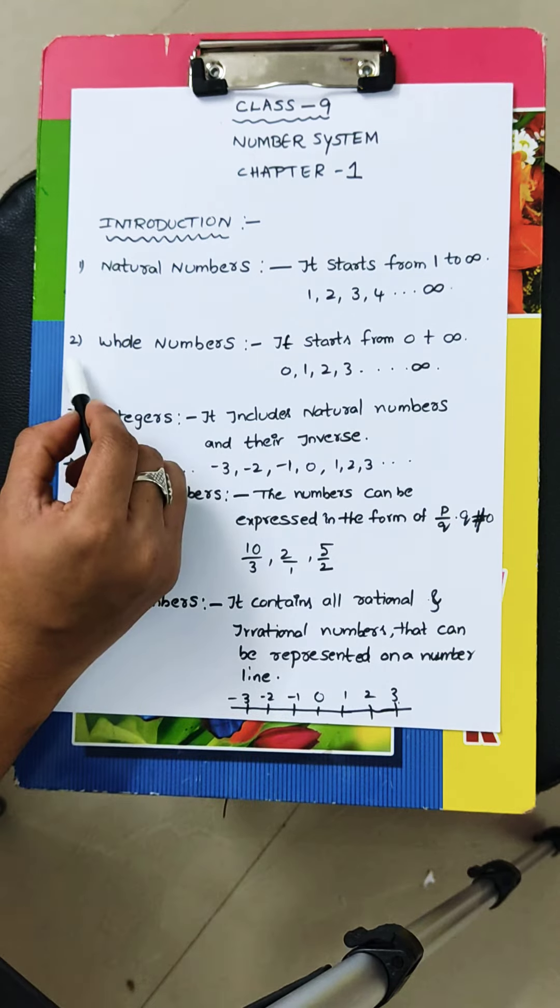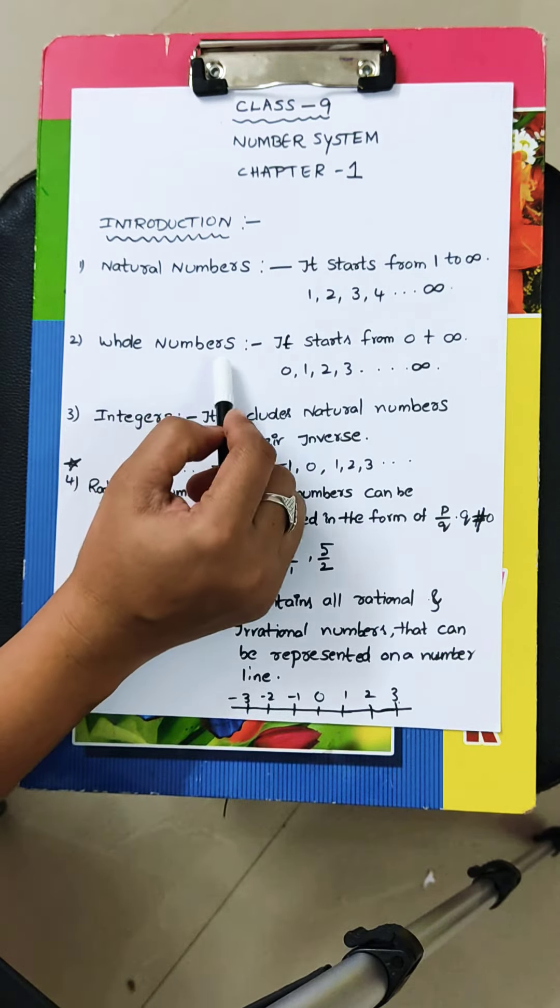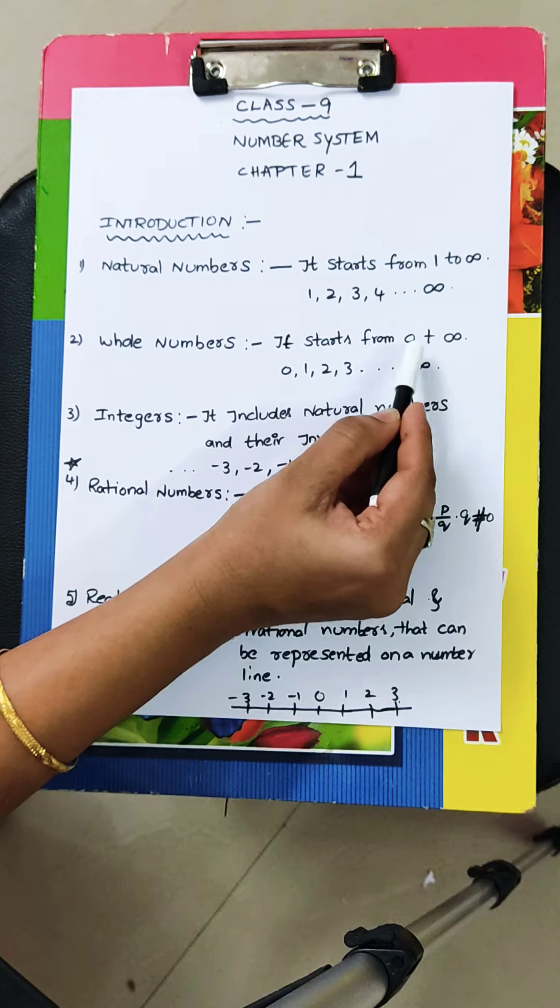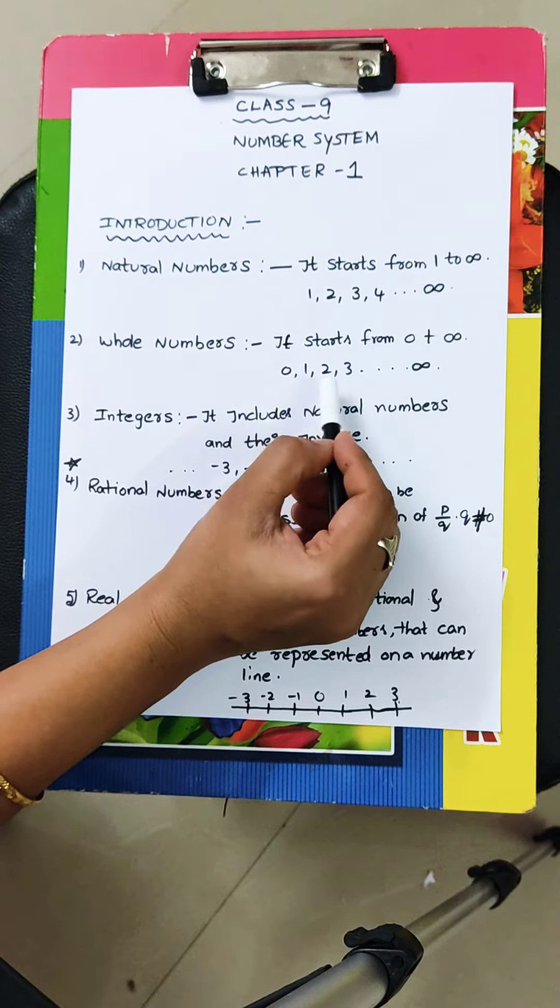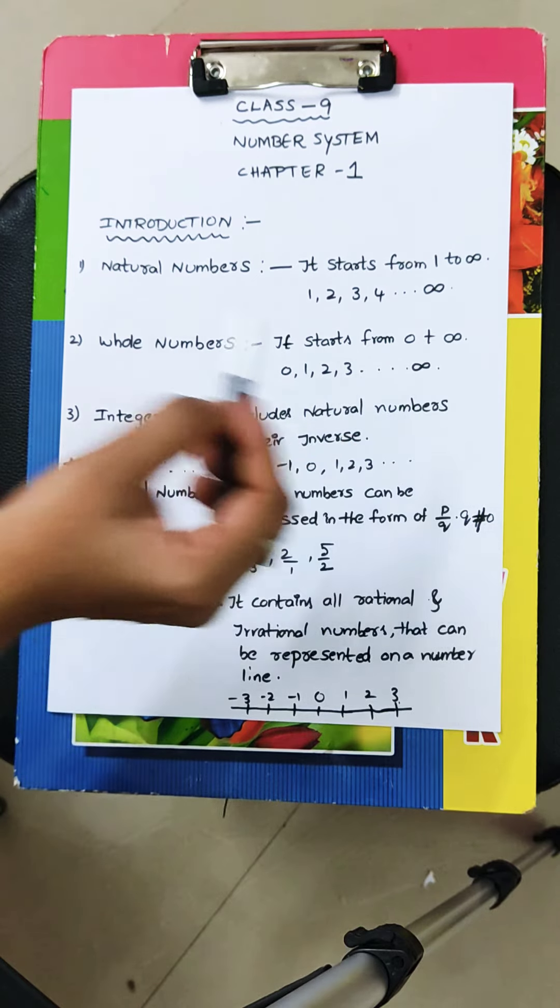Next, second one, whole numbers. What are the whole numbers? It starts from 0 to infinitive, 0, 1, 2, 3 and so on, infinitive.